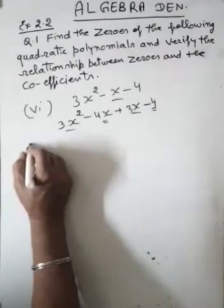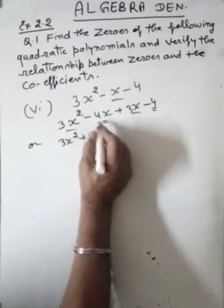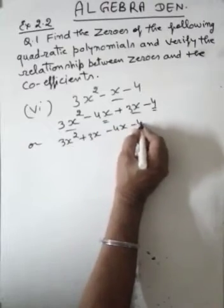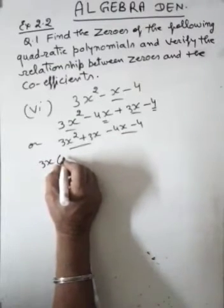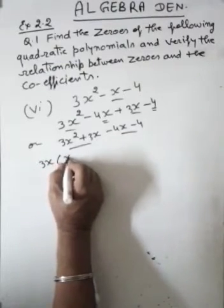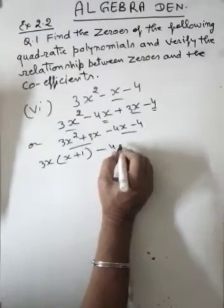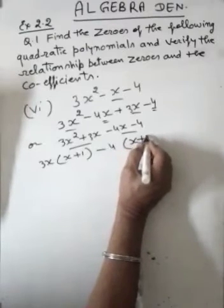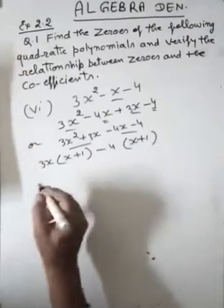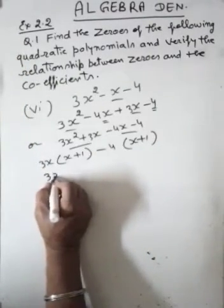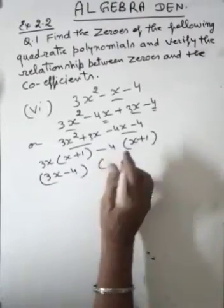This can be written as 3x squared plus 3x minus 4x minus 4. Now taking 3x as common, in the bracket it comes x plus 1. Similarly, taking 4 as common, in the bracket it comes x plus 1, because this is minus and outside minus, inside automatically becomes plus. So the factors are 3x minus 4 and x plus 1.